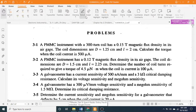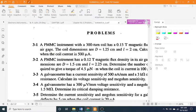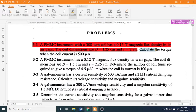3-1: A PMMC instrument with a 300-turn coil has a 0.15 T magnetic flux density in its air gaps. The coil dimensions are D = 1.25 cm and L = 2 cm. Calculate the torque when the coil current is 500 μA.